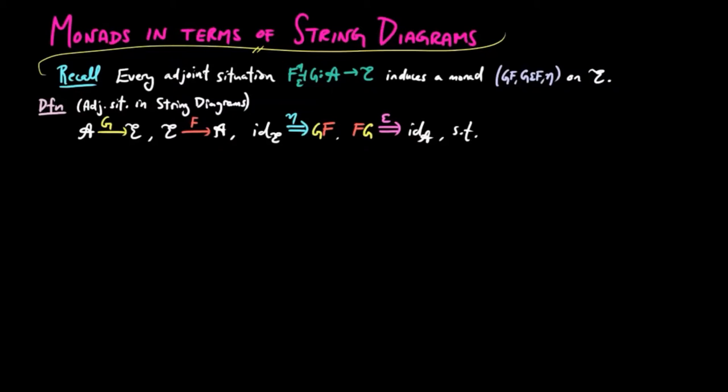satisfying the triangle identities: epsilon F F eta equal to the identity on F, and G epsilon eta G is equal to the identity on G.